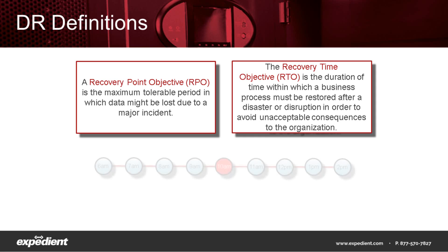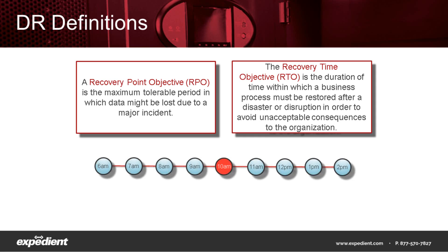This can be a little confusing, so let's put a timeline up showing a slice of a typical production day starting at 6 a.m. and going through 2 p.m. Let's assume that a disaster takes place involving the production IT infrastructure at 10 a.m. At that point, the business stakeholders issue a disaster declaration, and the IT team starts working through their DR runbook.